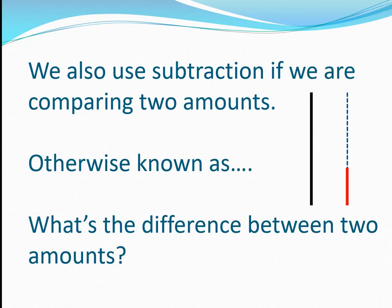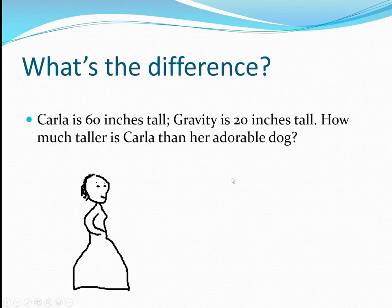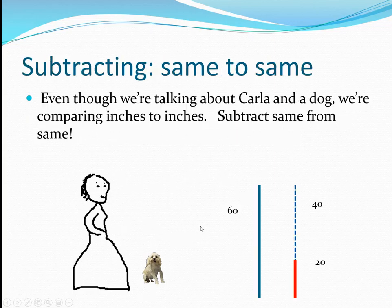We also use subtraction if we're comparing two amounts, otherwise known as what's the difference between two amounts. Carla is sixty inches tall. Gravity is twenty inches tall. How much taller is Carla than her adorable dog? Even though we're talking about Carla and a dog, we're comparing inches to inches. Carla's also five feet tall, but we need to compare the same to same — five minus twenty would make no sense.